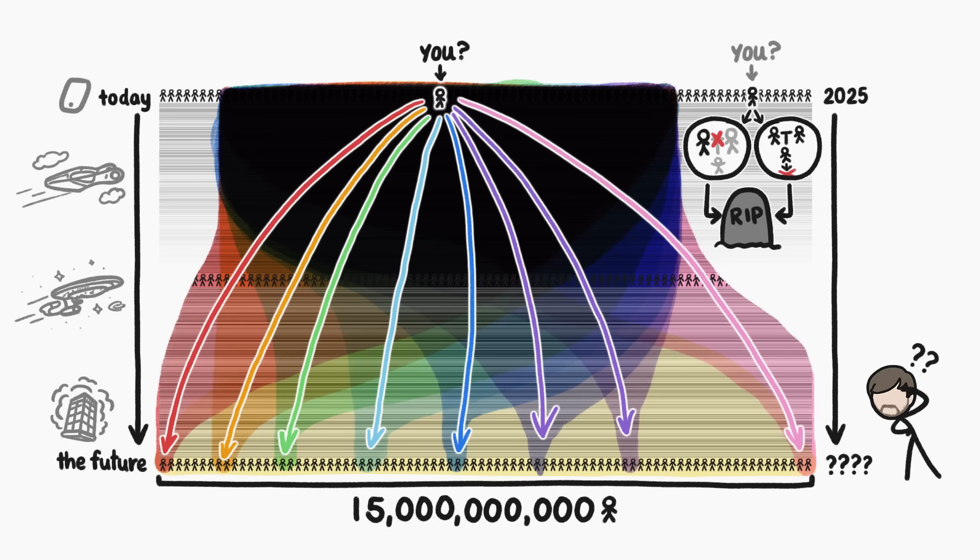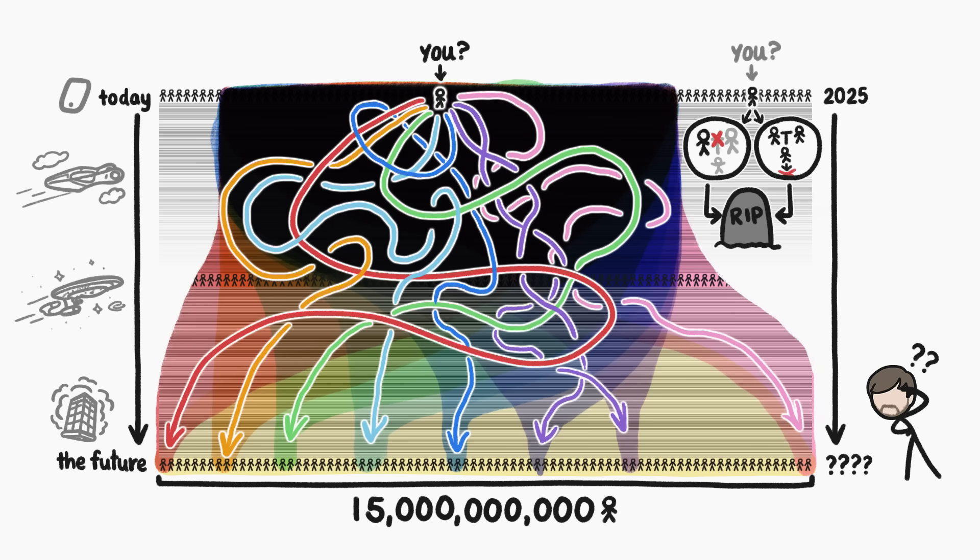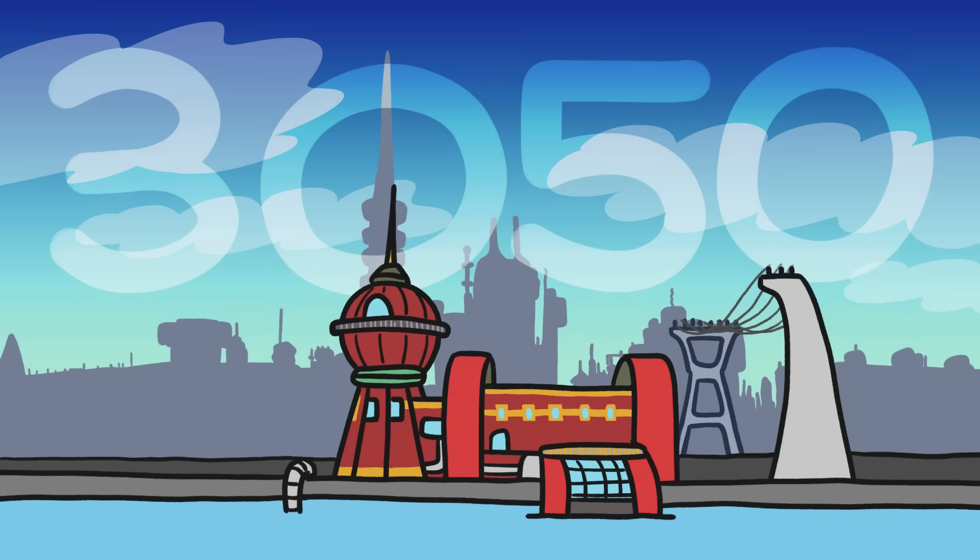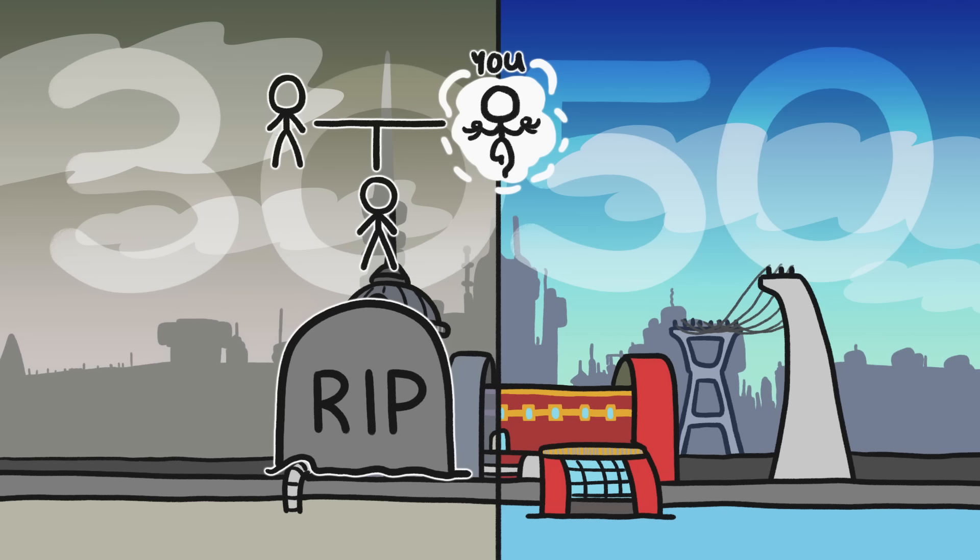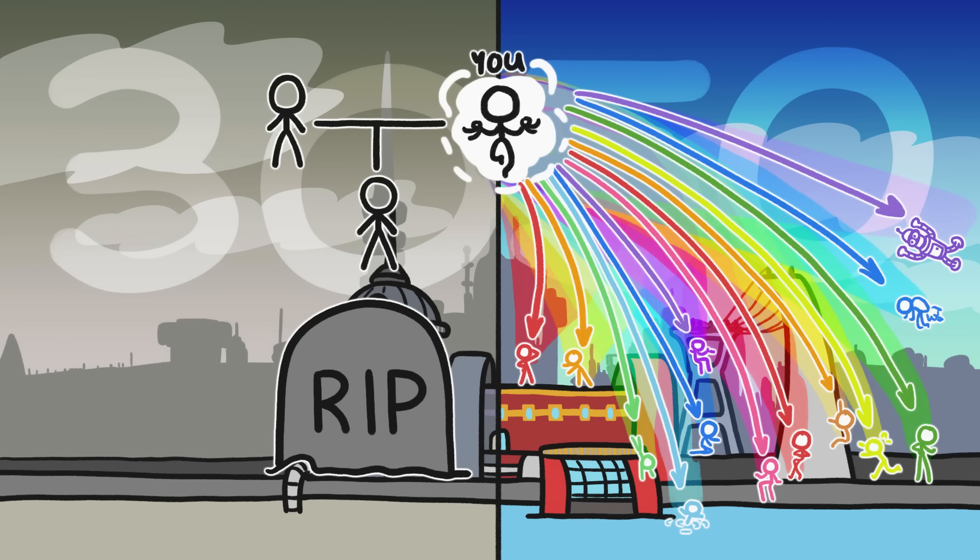But let's assume that the human population levels out at around 15 billion people, that we're a very intermingling bunch, and average generation times are about 25 years. Given those assumptions, as soon as the year 3050, you'll know which group you fall into. Either your lineage will be dead, or it will be universal.